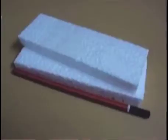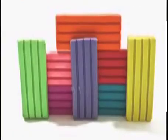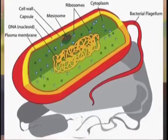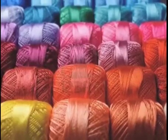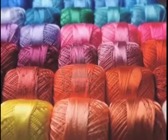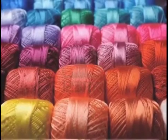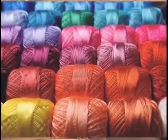Dear learners, you can now do a little activity which will make you confident and help you realize that you have understood the concept of a prokaryotic organism. You can take a thermopole or a cardboard and, with the help of plasticine, make a bacterial cell. You can use various threads of different colors and thickness to show the pili and the flagella.